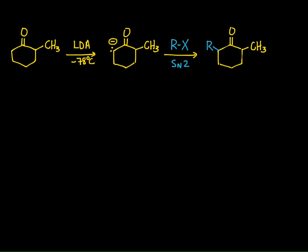If we warm this reaction up, we end up getting more and more of the 2,2-dimethyl product — if we're using methyl halide — and that has to do with the stability of the enolate. As you warm up the reaction at room temperature, the enolate on the right is more stable due to substitution of the alkene portion of the enolate.